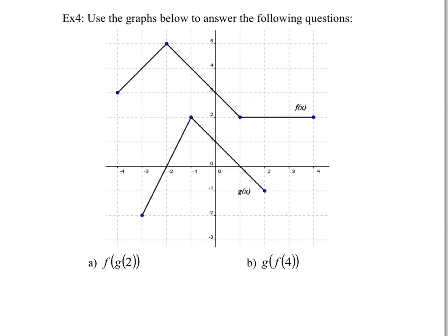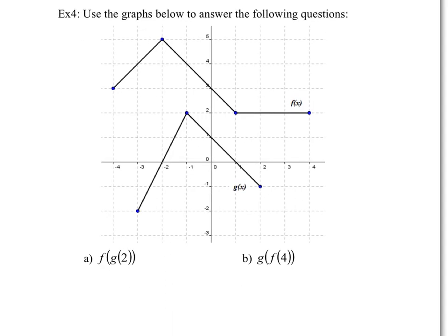This example uses graphs — very similar to the table of values example. For f of g of 2: when x equals 2, the value of g is negative 1, so rewrite this as f of negative 1. When you find x equals negative 1 on f, you get 4. So this whole thing equals 4. For f of 4: f of 4 is 2, so now you have g of 2, and we already found g of 2 equals negative 1. So the answer is negative 1.